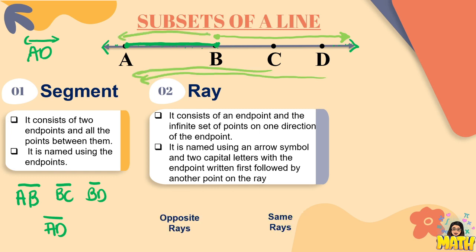To understand fully, we also have what we call opposite rays, just like ray BD and ray BA. So notice, ang BD is going to the right side, while BA is going to the left side. So since they have common endpoints, which is point B, but they extend indefinitely in opposite ways, tinatawag silang opposite rays.